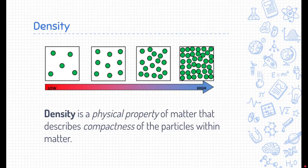Density is a physical property of matter that describes the compactness of the particles within matter. You can see here in this image that this substance has a low density, not too many particles, and this substance has a high density, a lot more particles shoved in the same amount of space.